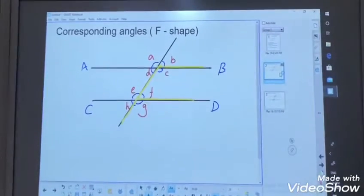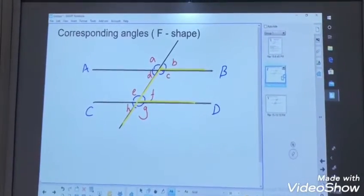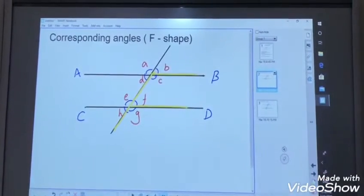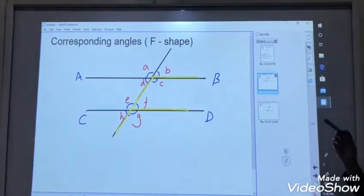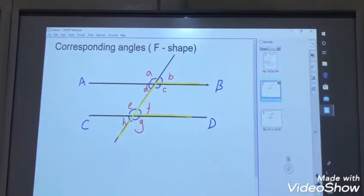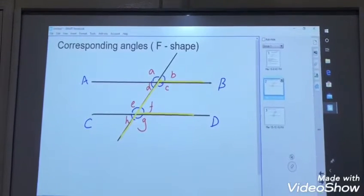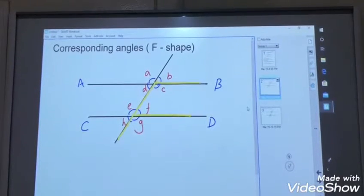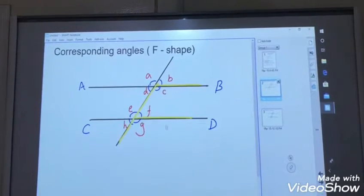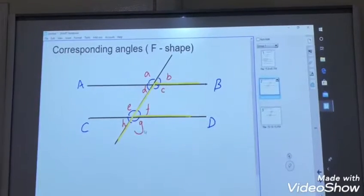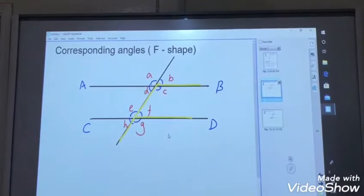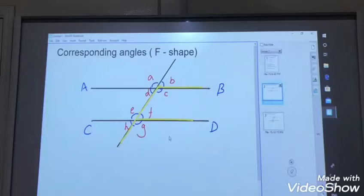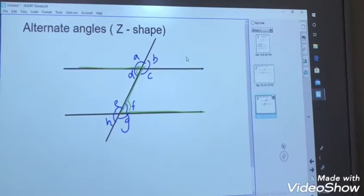Corresponding angles. What are corresponding angles? Looks like in shape of alphabet F. So here we have angle C and angle G. Angle C and angle G. These two are corresponding. Corresponding angles are equal to each other. So both are same.